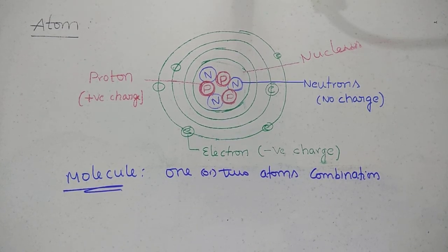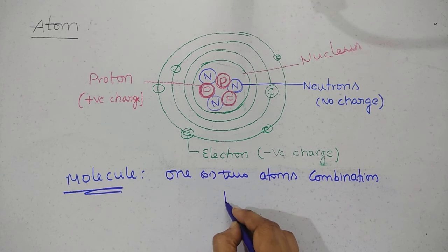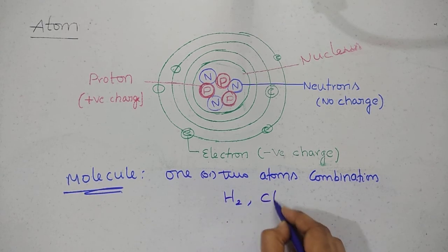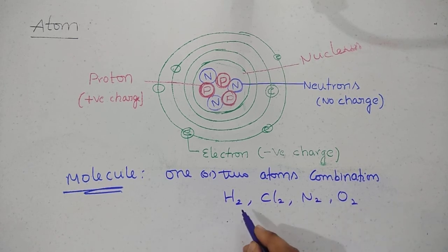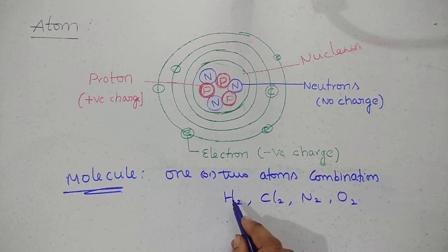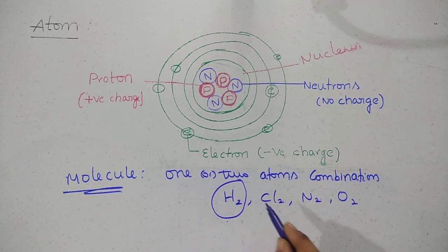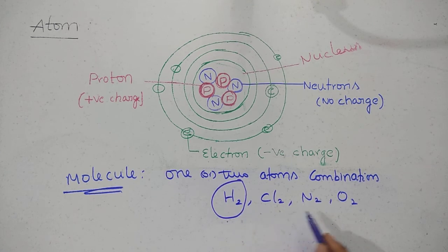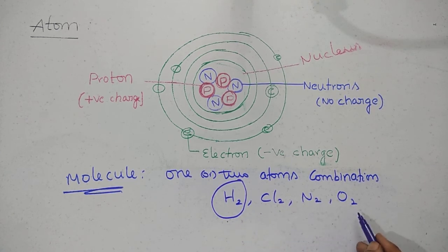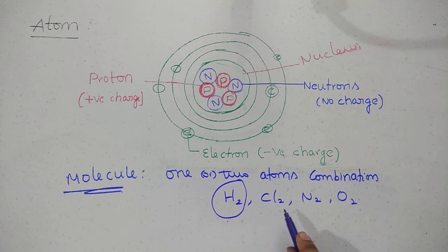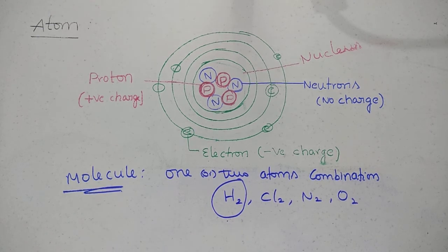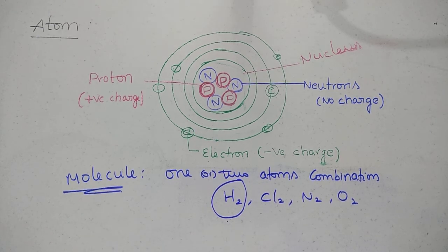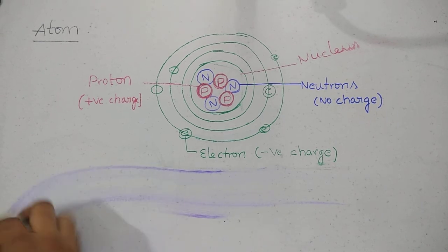Suppose one or two atoms: H2, Cl2, N2, O2. These are two atoms combined. So these are molecules: hydrogen molecule, nitrogen molecule, oxygen molecule, chlorine molecule. When atoms combine, that is molecule.